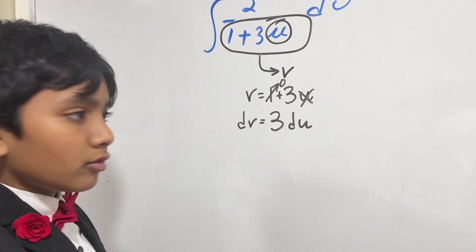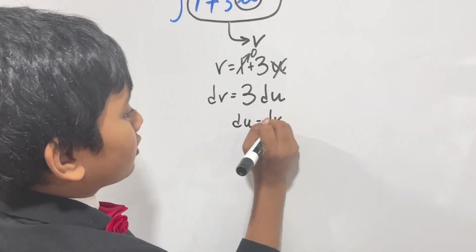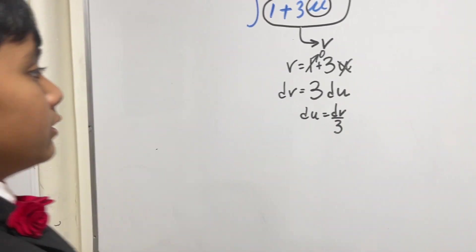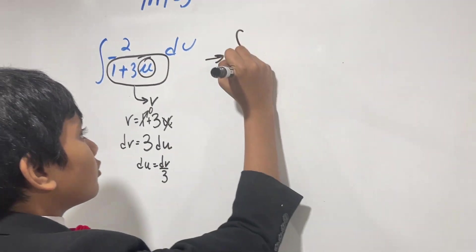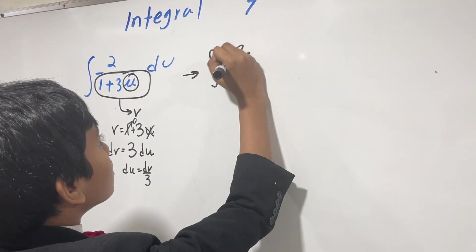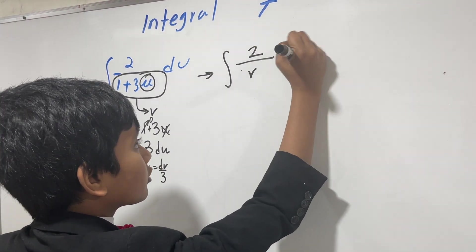Now what we're going to do is solve for du, and that is dv over 3. We treat v like a regular variable. Subbing v in, we get the integral of 2 over v, and then dv over 3.